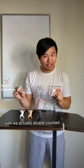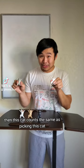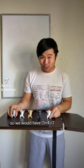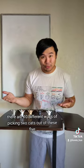Because remember, order doesn't matter. So picking this cat, then this cat counts the same as picking this cat, then this cat. So we would have five times four divided by two, which is 10. So five choose two is 10. There are 10 different ways of picking two cats out of these five, where order doesn't matter.